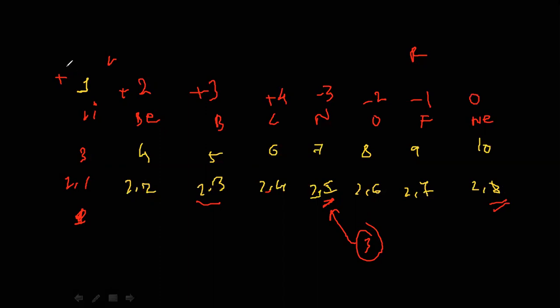So what you can see in the period from left to right, what is happening in case of valency? Will it remain same or is it increasing or decreasing? So we can say from left to right in the modern periodic table, valency initially increases.